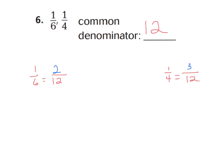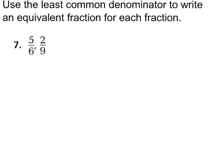Congratulations if you got the same answer. Let's move on to number 7. The directions say to use the least common denominator to write an equivalent fraction for each fraction. Think of multiples of 6: 6, 12, 18. I'll stop there because I can predict multiples of 9 in my head — multiples of 9 would be 9, 18. So I don't need to keep going. The least common denominator is 18.